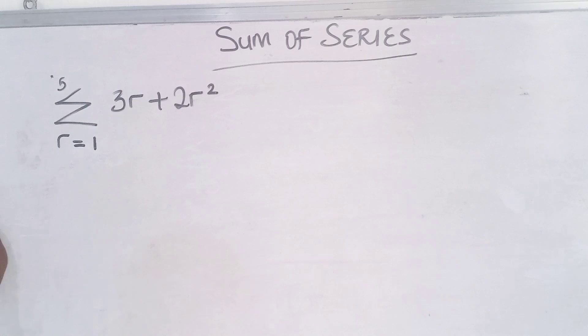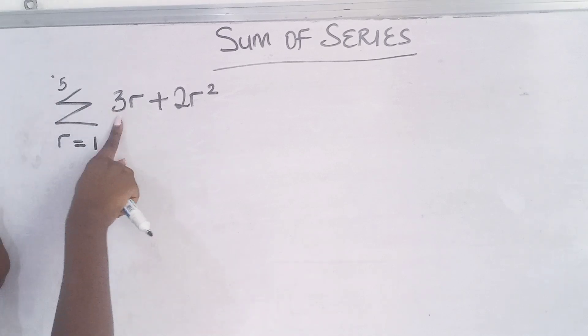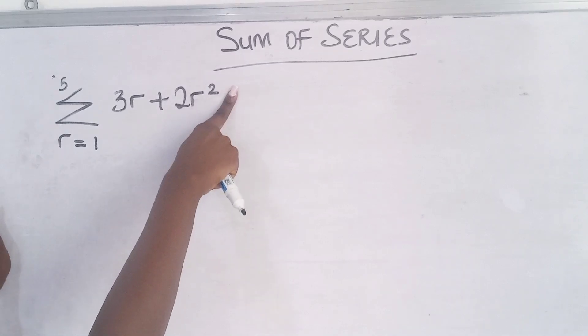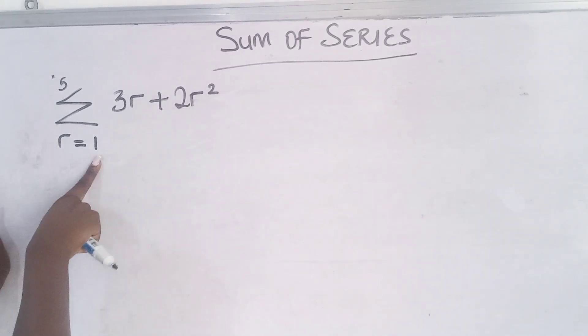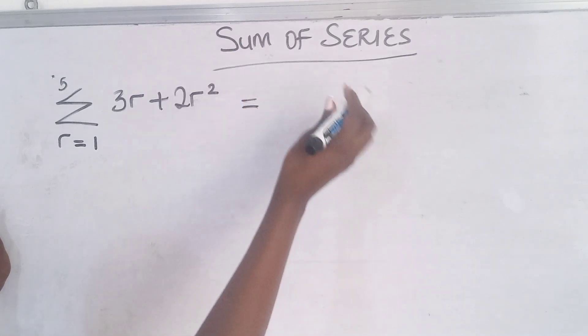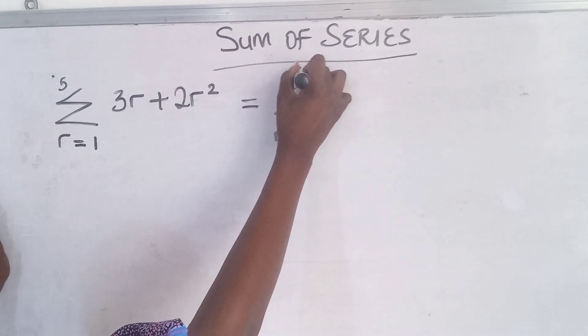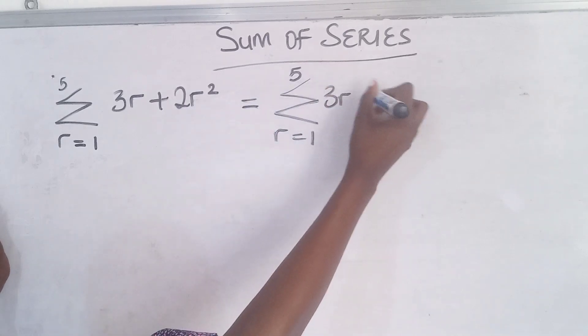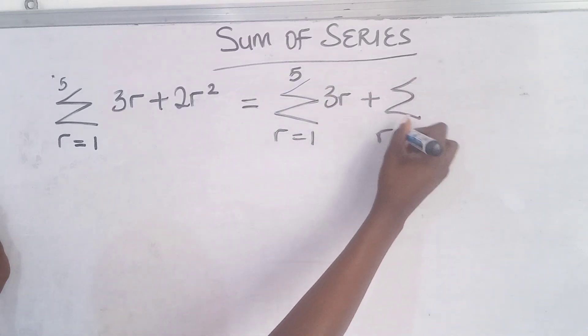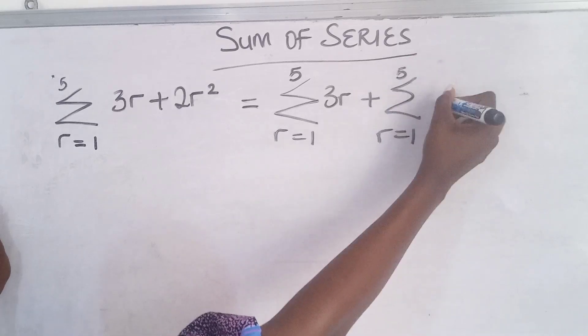We are given a question like this: summation of 3r plus 2r² such that r ranges from 1 to 5. Let's see how we solve this. We can separate it into summation r equals 1 to 5 of 3r plus the summation r equals 1 to 5 of 2r².